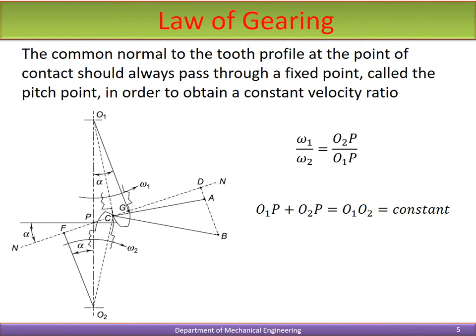Now we come to the law of gearing. In order to obtain a constant velocity ratio, the law of gearing must be satisfied. The law of gearing states that the common normal to the tooth profile at the point of contact should always pass through a fixed point called the pitch point, in order to obtain a constant velocity ratio.